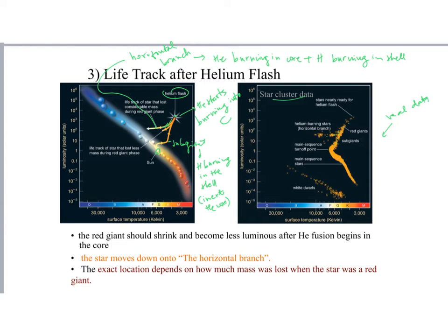Of course, there is some uncertainty as to exactly where the horizontal branch is. The exact location is going to depend on how much mass is actually lost when the star was a red giant, because that phase also comes with some winds that are going to take away some of the material from the surface of the star.